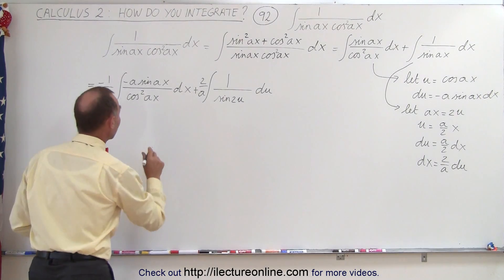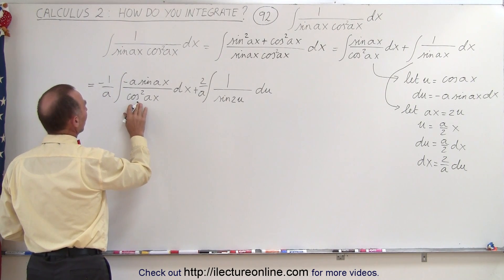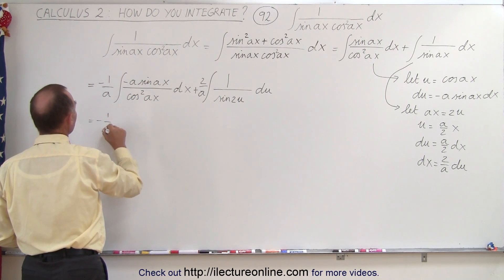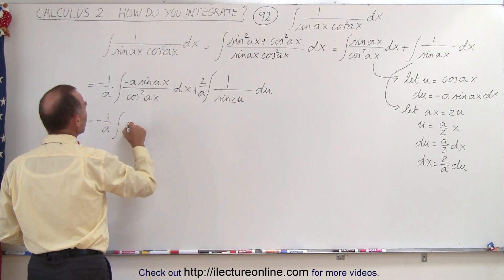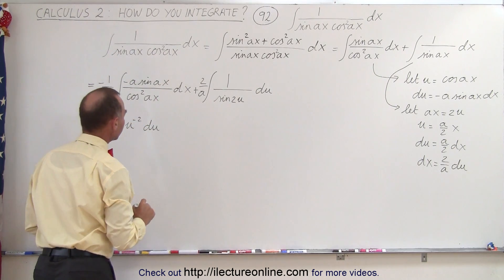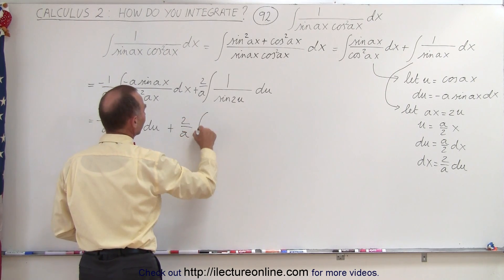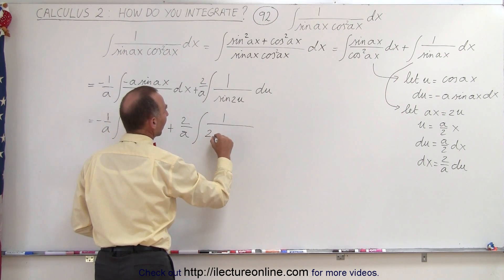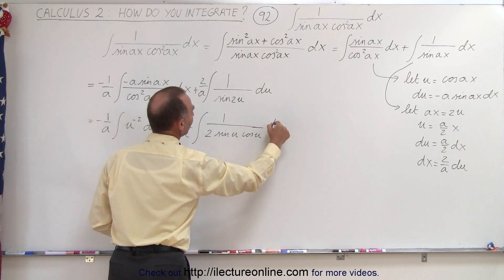Just stay tuned and you'll see why we did that. The first integral is easy to integrate because this is basically U squared in the denominator and DU in the numerator, so this becomes equal to minus 1 over A times the integral of U to the minus 2 DU. Over here, we have plus 2 over A times the integral of 1 divided by 2 times the sine of U times the cosine of U times DU.